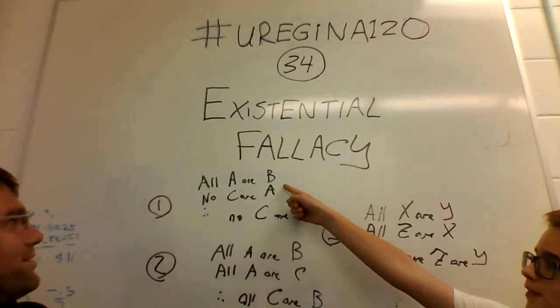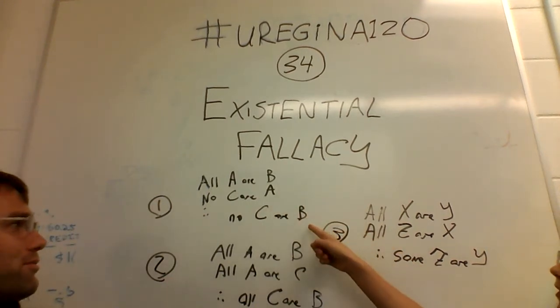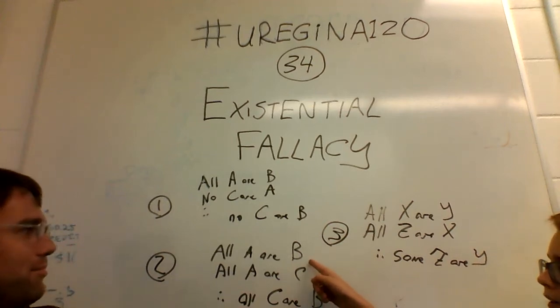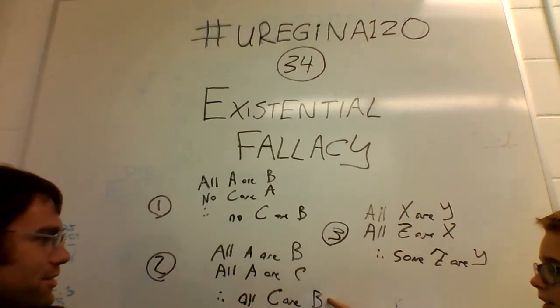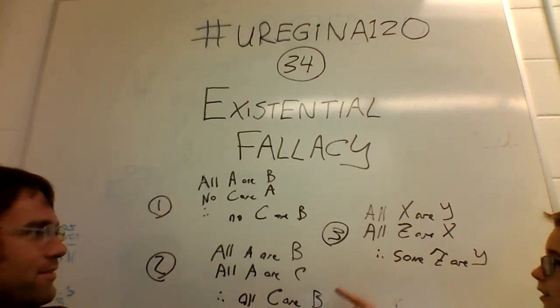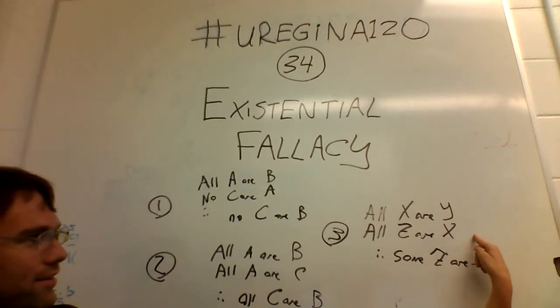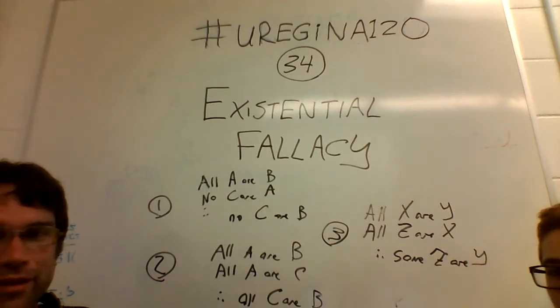All A are B, no C are A, therefore no C are E. All A are B, all A are C, therefore all C are E. All X are Y, all Z are X, therefore some Z are Y.